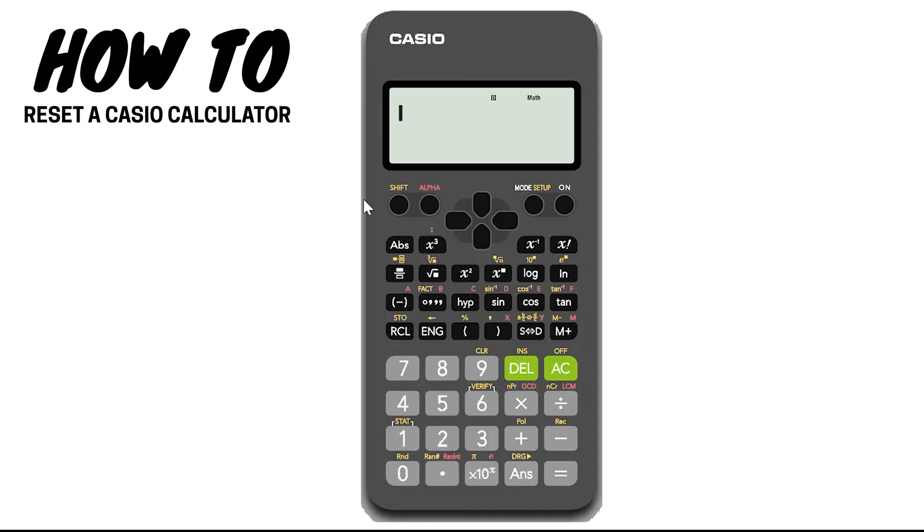Number one: resetting your calculator. This hack returns your calculator back to its factory settings and clears all the memory. It's a good idea to reset your calculator before an exam or quiz. To reset your calculator, press shift, nine, three, equals, and then the all clear button.